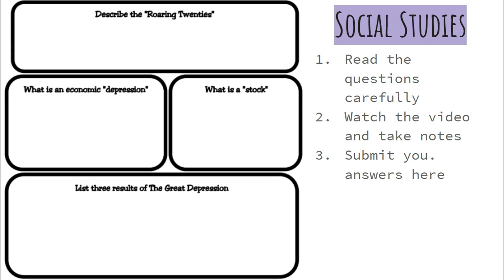Read the questions carefully, watch the video, take notes, and then submit your answers. Our questions for today are: describe the Roaring 20s, what is an economic depression, what is a stock, and list three results of the Great Depression.